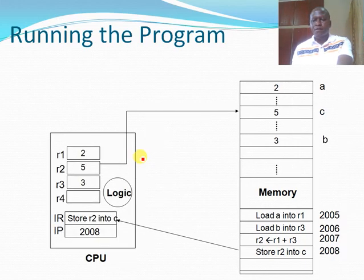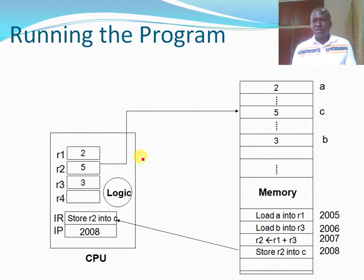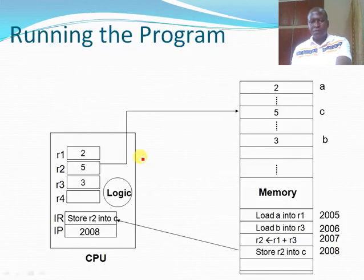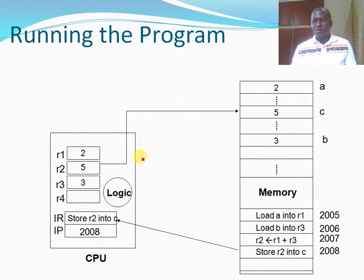Once the processor finishes the computation, the result of R2 is resident in the register. The next thing the processor needs to do is write the content of the result back to the random access memory at variable location C. As shown in the next simulation, as soon as that information is stored in C, that particular computation has been fully executed as required.